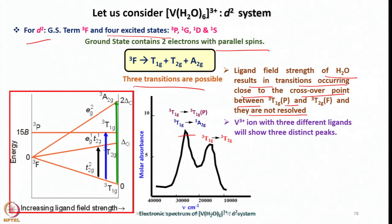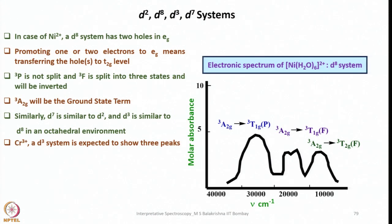Three transitions are possible, with two having a very narrow gap appearing close together. Just as we combined D¹, D⁴, D⁶, D⁹, is it possible to combine D², D⁸, D³, D⁷ because of their similarities? In nickel²⁺, a D⁸ system, there are two holes in Eg. In D² we have two electrons, while in D⁸ we have two holes in Eg. Promoting one or two electrons to Eg means transferring holes from Eg to the t₂g level.